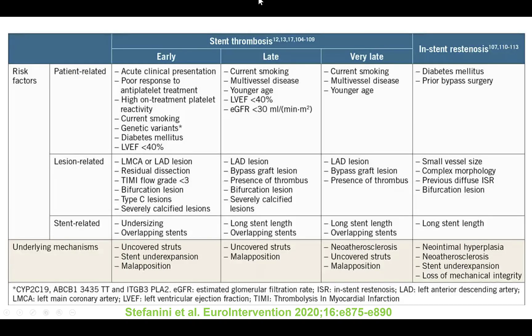Stent thrombosis is classified based on timing: early, late, and very late. Early is less than 30 days, late is 30 days to one year, and very late is more than one year. Early is further subdivided into acute, which is within 24 hours, or more than 24 hours until 30 days.